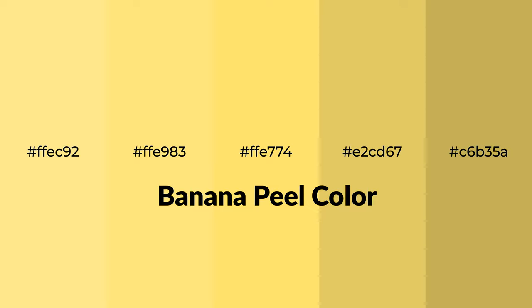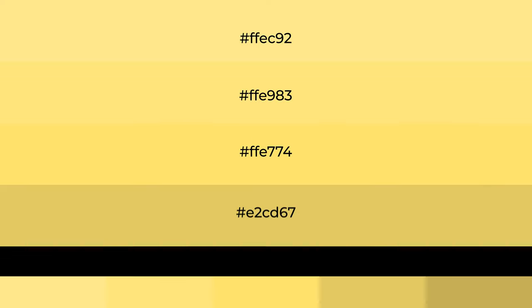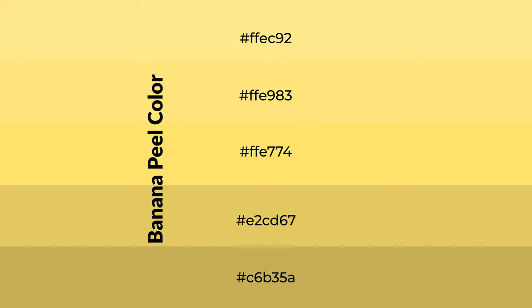Warm shades of banana peel color with yellow hue for your next project. To generate tints of a color we add white to the color, and tints create light and exquisite emotions. To generate shades of a color we add black to the color, and it is used in patterns, 3D effects, layers, and shades to create depth and drama.